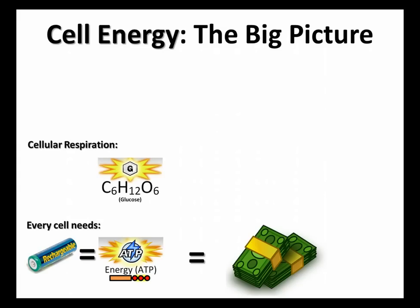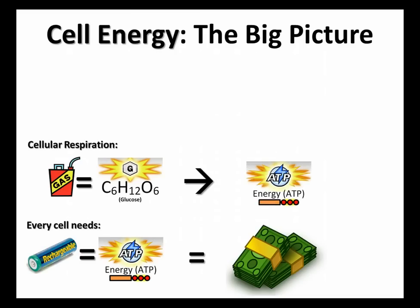Cellular respiration starts with C6H12O6, better known as glucose, a type of sugar. Think of this as like gasoline — it's energy that's stored. What does gasoline do? It stores energy, and you put it in a car or another motor and it's going to burn that to produce energy. We burn glucose in order to make ATP. Well, that raises the question: where did we get the glucose from?